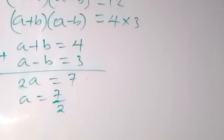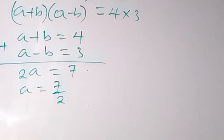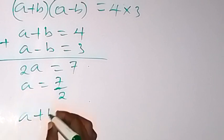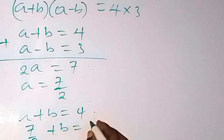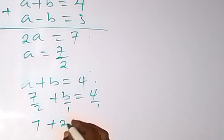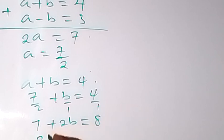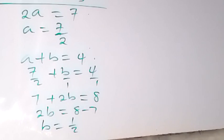Our a is 7 over 2. To get b, we use the first equation: a plus b equals 4, substituting a equals 7 over 2 plus b equals 4. Multiplying through by 2 gives 7 plus 2b equals 8. Taking 7 to the other side, we get 2b equals 8 minus 7, which is 1. So b equals 1 over 2. We now have the value of a and the value of b.